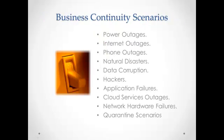Some situations to consider in business continuity planning include power outages, internet outages, phone outages, natural disasters like blizzards, floods, earthquakes, hurricanes, and so on. Also data corruption, hackers, application failures, cloud service outages, network outages, and hardware failure, and quarantine scenarios such as chemical spills, gas leaks, and terrorist attacks.